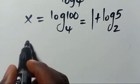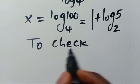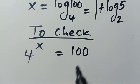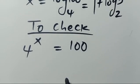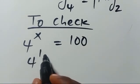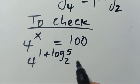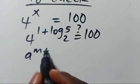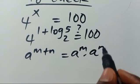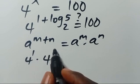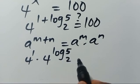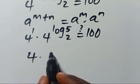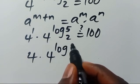Now let us verify. We have 4 to the power of x equals 100. For the first answer, we substitute x equals 1 plus log 5 in base 2, giving 4 to the power of 1 plus log 5 in base 2 equals 100.